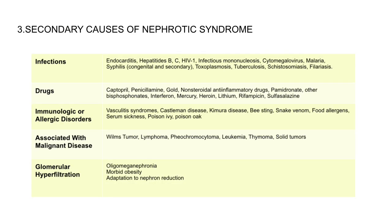Secondary causes of nephrotic syndrome include infections such as hepatitis B, C, cytomegalovirus, malaria, etc. Drugs such as captopril, penicillamine, gold, pamidronate, interferon, and mercury. Immunological or allergic disorders such as Castleman disease. Malignant diseases such as Wilms tumor, lymphoma, pheochromocytoma, leukemia, thymoma, and solid tumors. Also glomerular hyperfiltration secondary to morbid obesity, oligomeganephronia, or adaptation to nephron reduction.